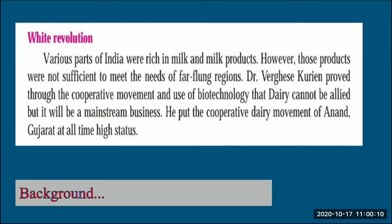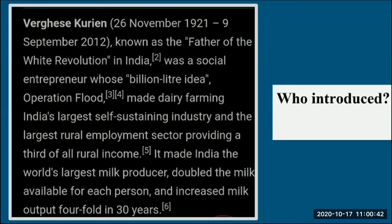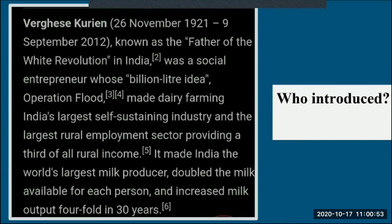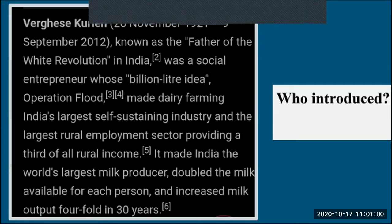Dr. Kurian put the cooperative dairy movement of Anand, Gujarat, at an all-time high. A cooperative is a farm business or organization owned and run jointly by its members, who share the profits and benefits — not only one person, but all who contribute to the business get the benefits.